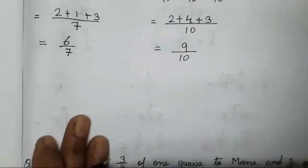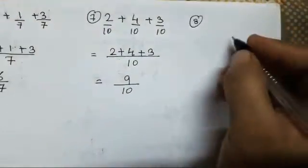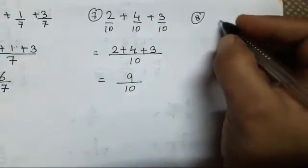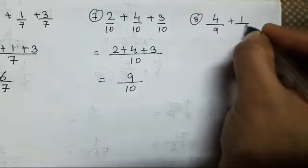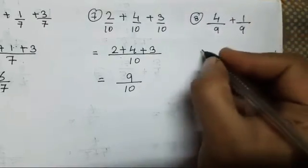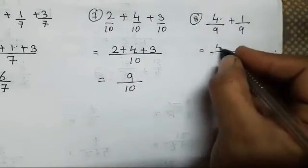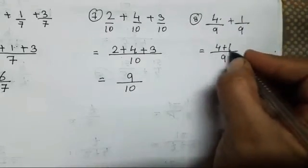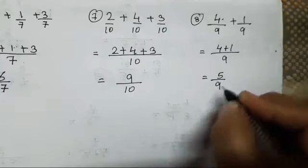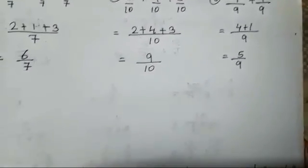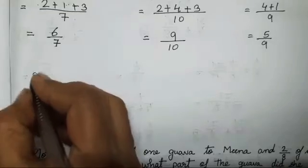The eighth sum is 4 upon 9 plus 1 upon 9. We write 9 as it is. 4 plus 1 is 5 upon 9. This cannot be reduced, so we will keep it as it is.